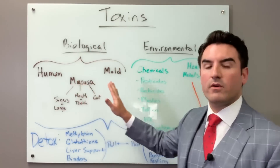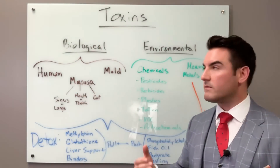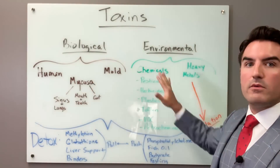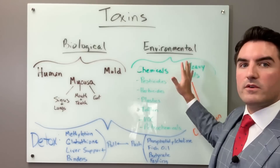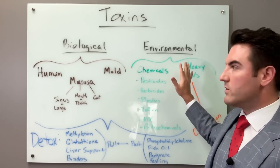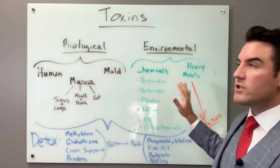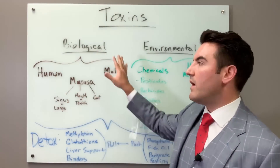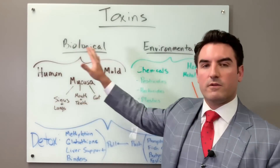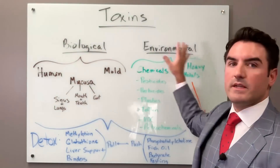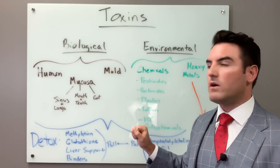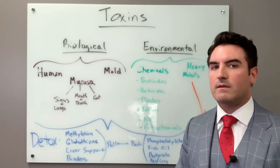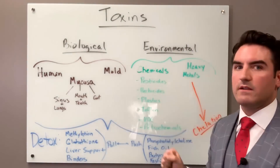In functional medicine, we work on biological toxins first. The first step is simply eliminating your exposure — eating organic foods, avoiding dirty water and food. Without your own biological toxins flowing and being detoxified, you will not be able to get rid of environmental toxins very well. We always start with the gut first, cleaning out sinuses, mouth, teeth, and mold, and addressing human toxins before moving into environmental toxins.